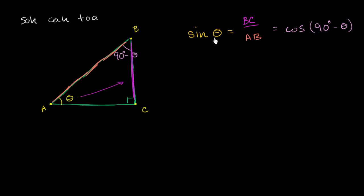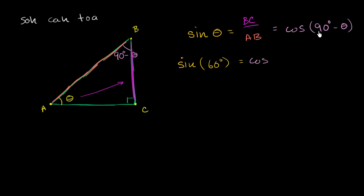That's a pretty neat relationship: the sine of an angle is equal to the cosine of its complement. For example, the sine of 60 degrees is going to be equal to the cosine of what? Well, it's going to be the cosine of 90 minus 60 — the cosine of 30 degrees. 30 plus 60 is 90.